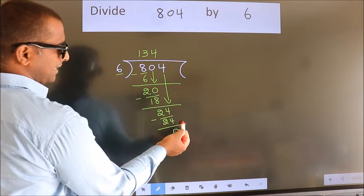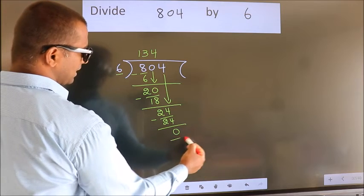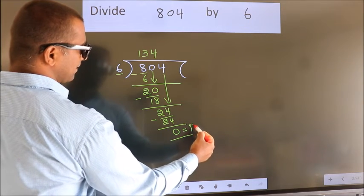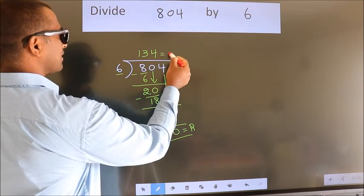No more numbers to bring it down. So we stop here. This is our remainder. This is our quotient.